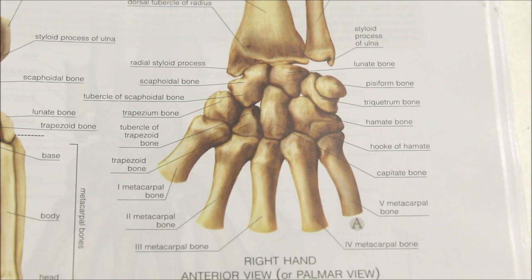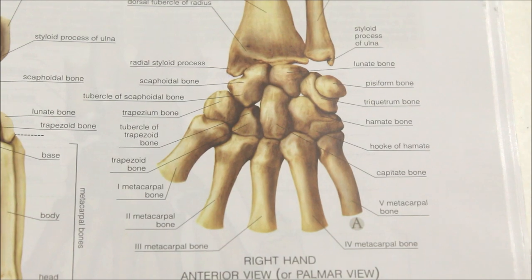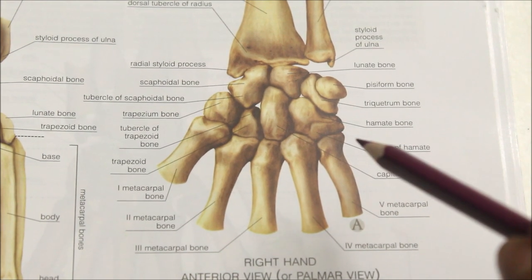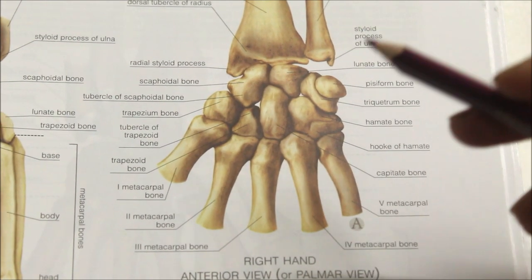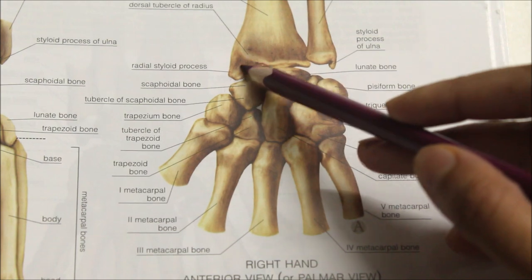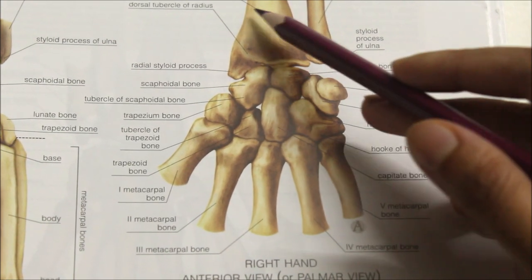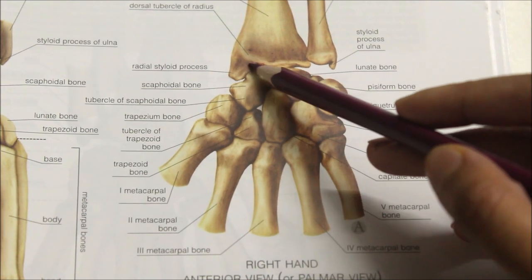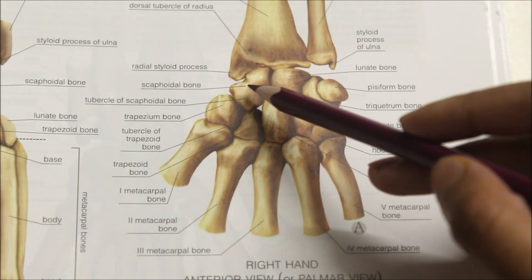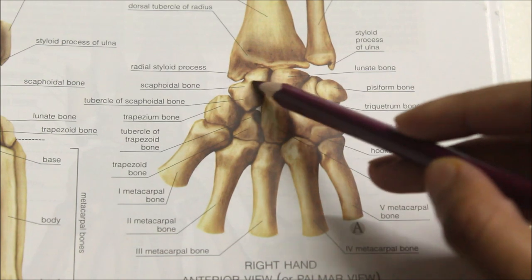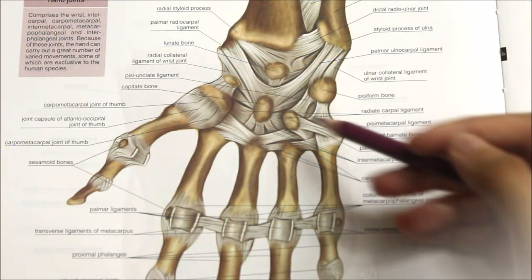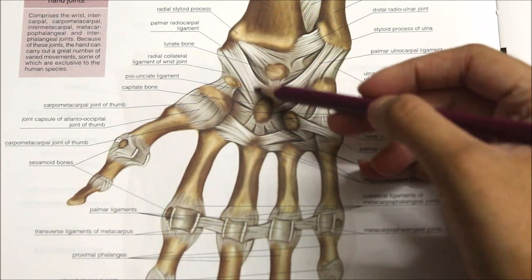Moving on to the palmar carpal ligaments. First is the palmar radiocarpal ligament, which is a broad band that begins from the anterior margin of the lower end of the radius and its styloid process. It runs downwards and medially and is attached below to the anterior surface of the scaphoid, the lunate and the triquetrum bone.